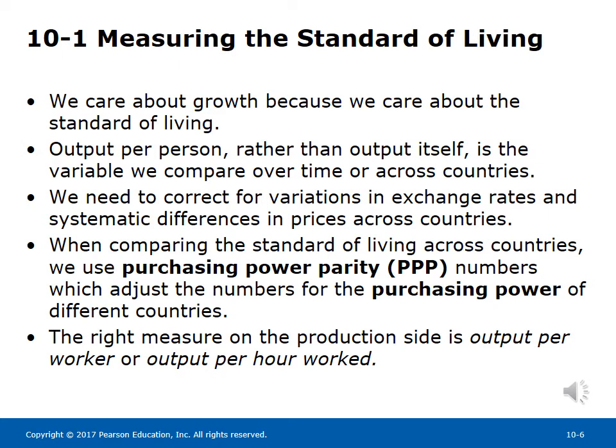Section 10-1: Measuring the Standard of Living. We care about growth because we care about the standard of living. Output per person, rather than output itself, is the variable we compare over time or across countries. We need to correct for variations in exchange rates and systematic differences in prices across countries, since food and essential services tend to be cheaper in poorer countries. When comparing the standard of living across countries, we use purchasing power parity (PPP) numbers, which apply a common set of prices to calculate GDP per person for different countries. The right measure on the production side is output per worker or output per hour worked.